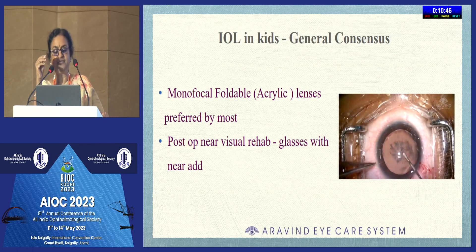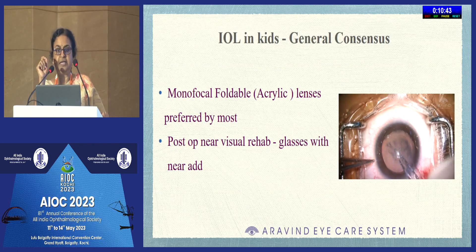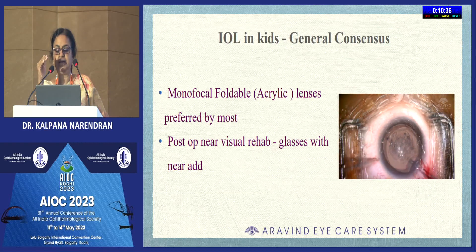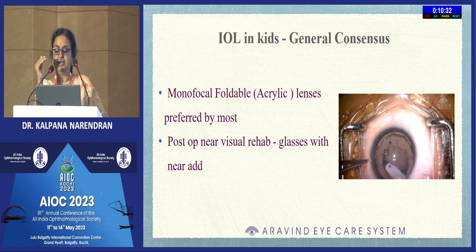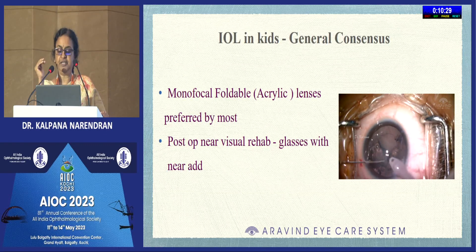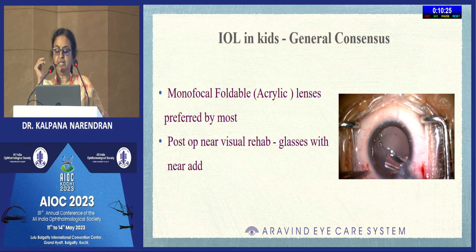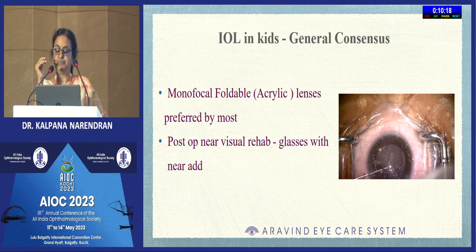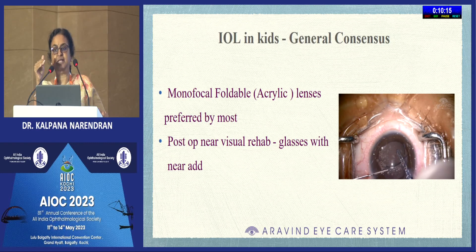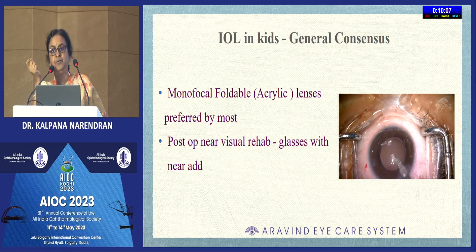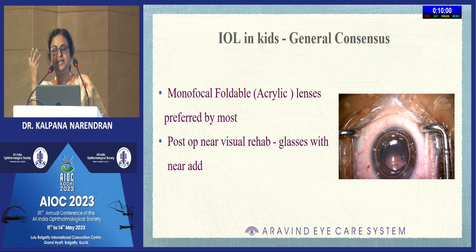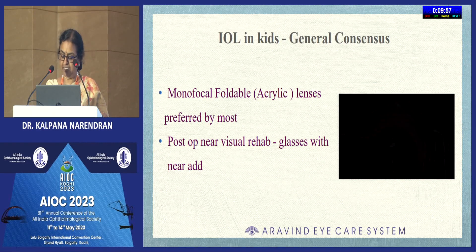The monofocal foldable acrylic lens is preferred by most and has given good results. Parents and the child must be primed that the child will need glasses for near and distance. A three-piece monofocal lens is preferred in children below the age of five or six years, because with the myopic shift in mind, there is a possibility the child might later need an IOL exchange. A three-piece lens is easier to exchange because adhesions are less compared to a single-piece IOL.